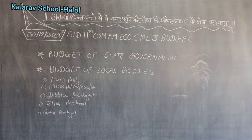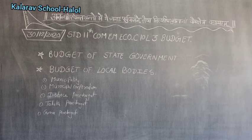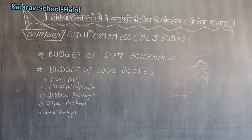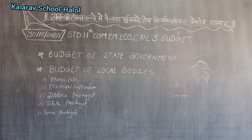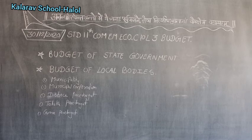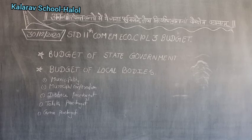Taluka panchayat operates at taluka level and gram panchayat at village level. The Constitution has suggested the role of these governments, and these governments can also collect some income on their own. The main functions of local government pertain to water supply, water pump, sewage, road, cleanliness, public health, electrification of their region, and so on. These are the expenses done by them. Now let's see what are their income sources, expenditure, and what capital account income and expenditure they maintain.